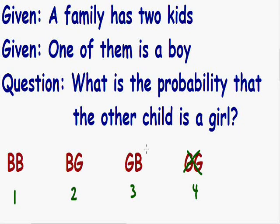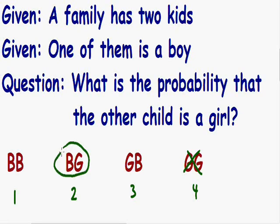We're left with three possible combinations where at least one of the children is a boy. In combination 1, we have one child that's a boy, but the other child is also a boy. In combination 2, we have one child that's a boy and the other child is a girl — that's one of the combinations we're looking for. In combination 3, we also have one child that's a boy and the other child is a girl — that's another combination we're looking for. So out of three possible combinations, only two out of those three have the other child being a girl.